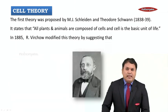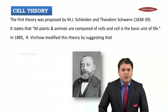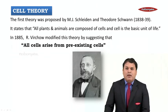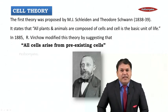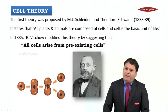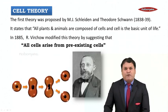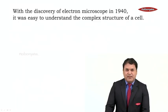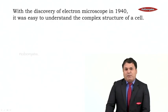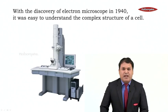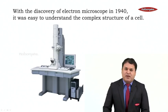Later, in the year 1855, R. Virchow modified this theory by suggesting that all cells arise from pre-existing cells. Only when a pre-existing cell is present can a new cell arise. Then, with the discovery of the electron microscope in the year 1940, it became easy to understand the complex structure of a cell.